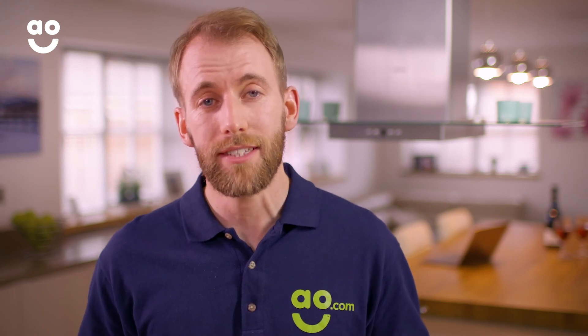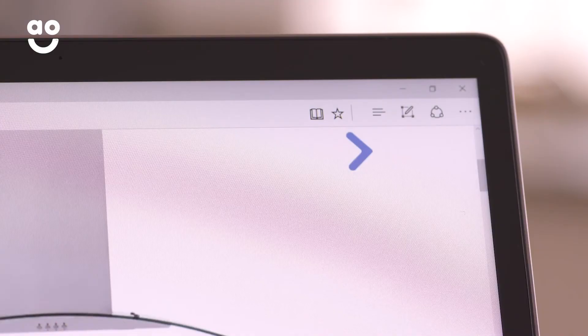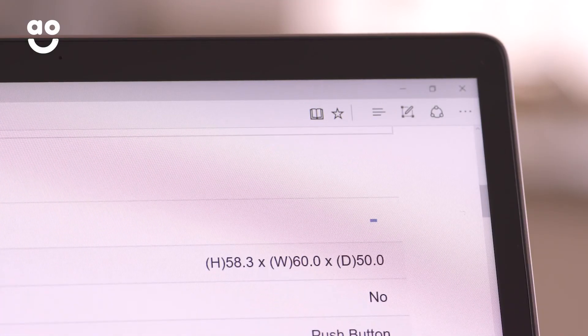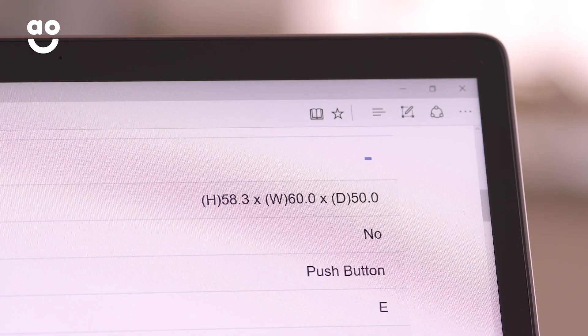If you're upgrading to a new appliance, a handy way to get your measurements right is to check the dimensions of the existing appliance. Take a note so that you can refer back to them when you're browsing our website. If you're building a kitchen from scratch, you can find all the dimensions for our built-in appliances on our product pages.